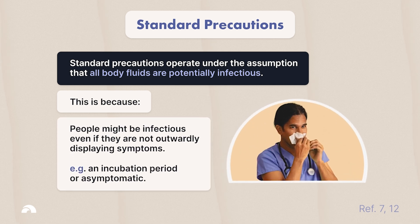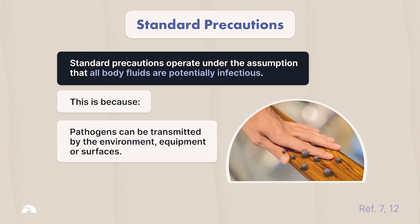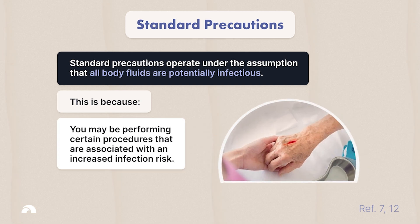People might be infectious even if they are not outwardly displaying symptoms. For example, they may be in an incubation period or be asymptomatic. Pathogens can be transmitted by the environment, equipment or surfaces. You may be performing certain procedures that are associated with an increased infection risk.